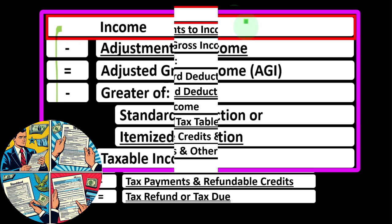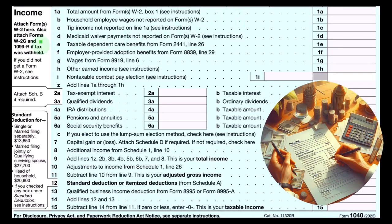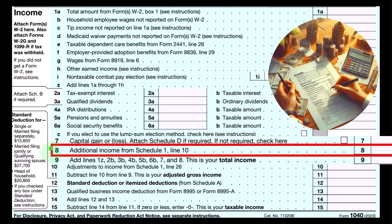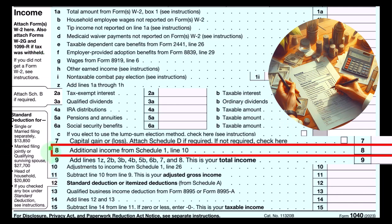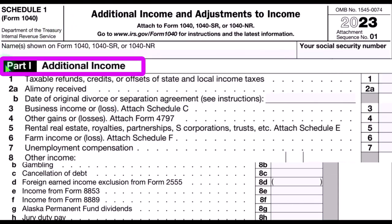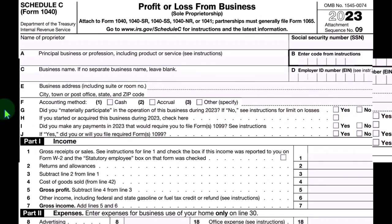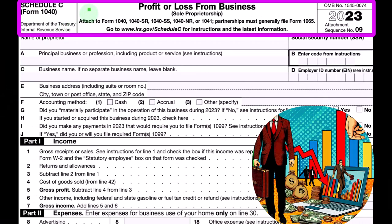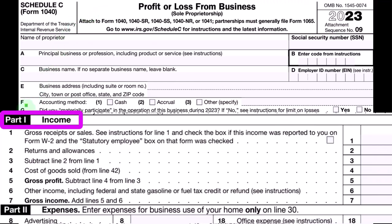The formula basically represents the calculation behind the Form 1040. This is the first page of the 1040, with Schedule C ultimately rolling into line number eight, additional income from Schedule 1. Here is Schedule 1, additional income and adjustments to income. Part one, the Schedule C rolls into line three, business income or loss. This is the Schedule C, profit or loss from business, having an income statement or P&L, profit and loss format.